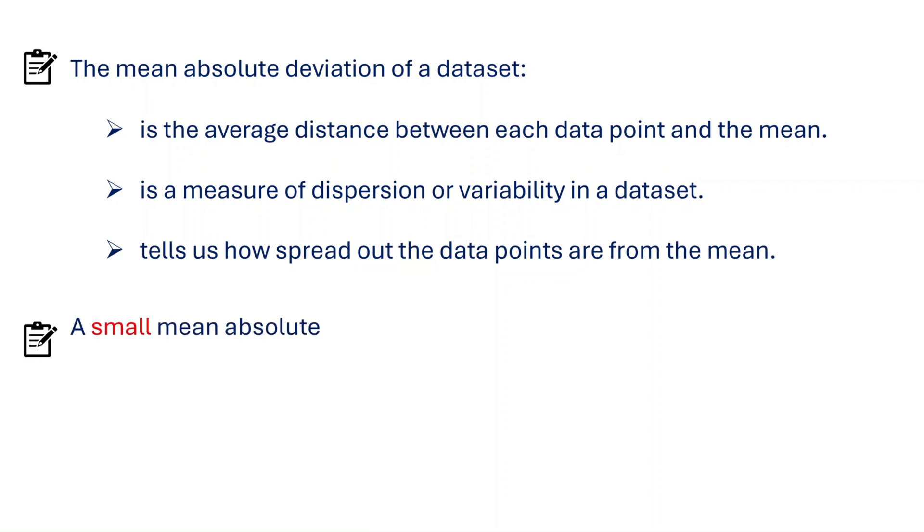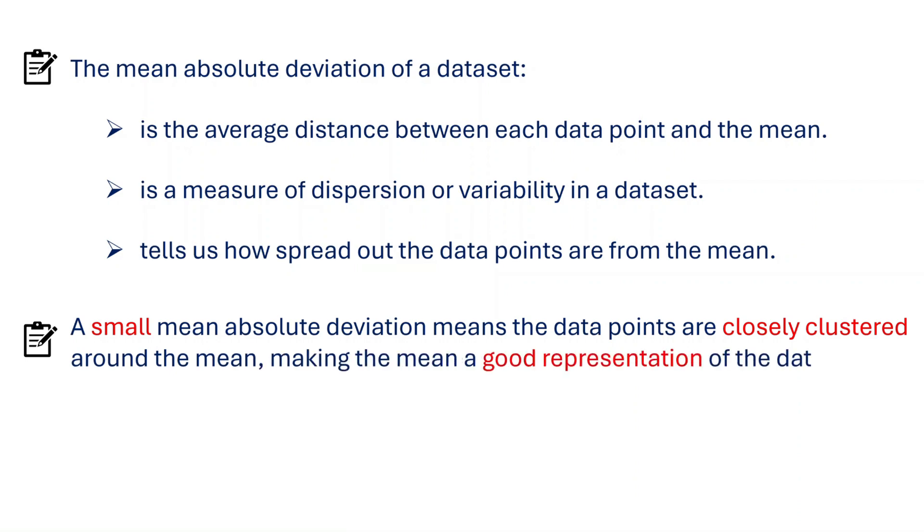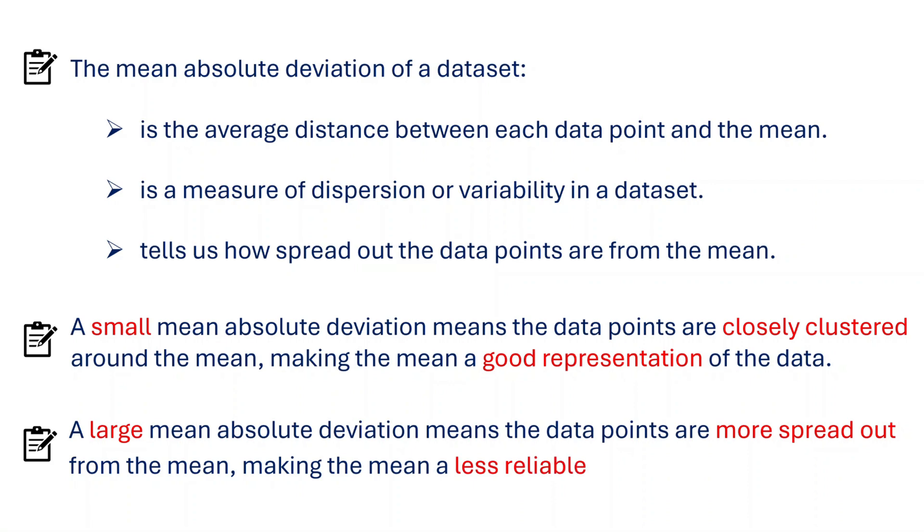A small mean absolute deviation means the data points are closely clustered around the mean, making the mean a good representation of the data. A large mean absolute deviation means the data points are more spread out from the mean, making the mean a less reliable representation of the data.